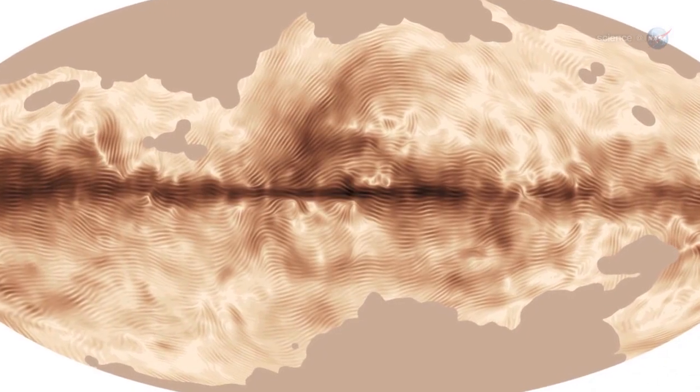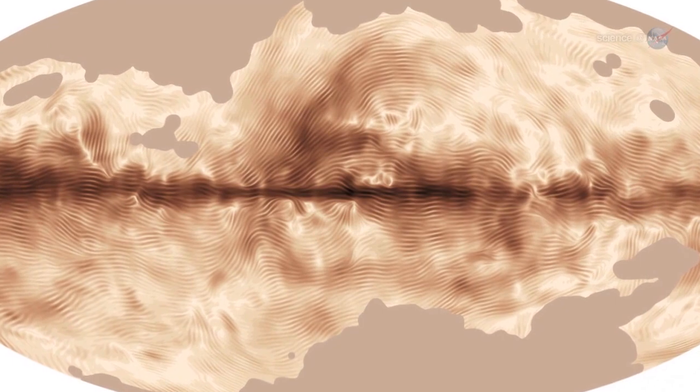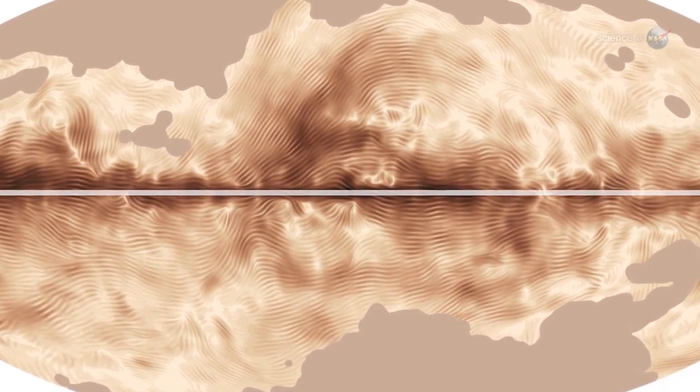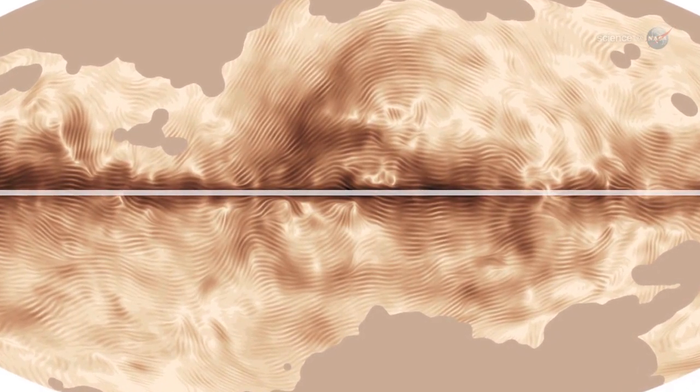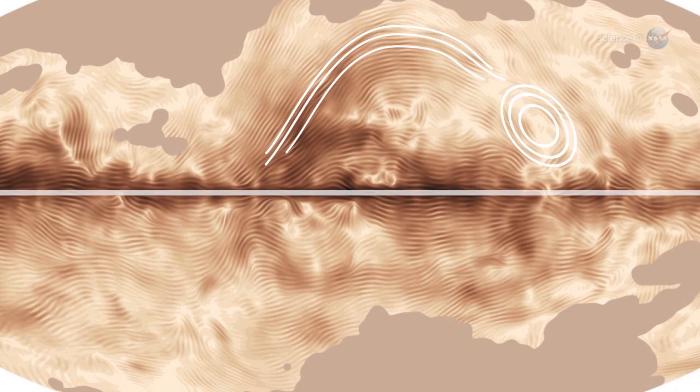Because Planck sees the Milky Way edge on, however, the spiral field appears to line up parallel to the galactic plane. There are also many graceful arches and loops that trace the shells of nearby supernova explosions.